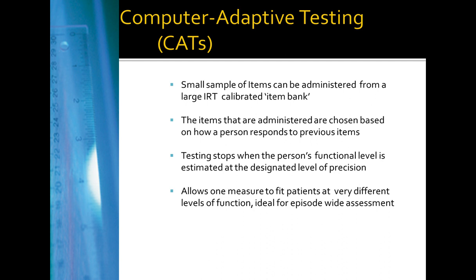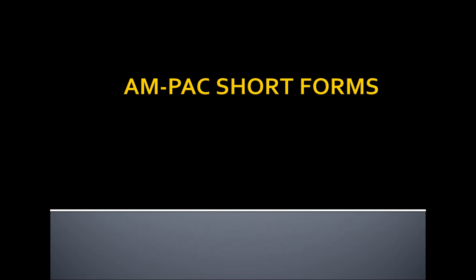The same measure can fit patients at very different levels of functioning because the algorithm selects very different items based on the patient's functioning level. For a hospital patient functioning at a very low level, low-level items are selected; for an outpatient in a community setting, a very different set is selected. This is what makes it possible to get precise estimates of patient function across all those different care settings.